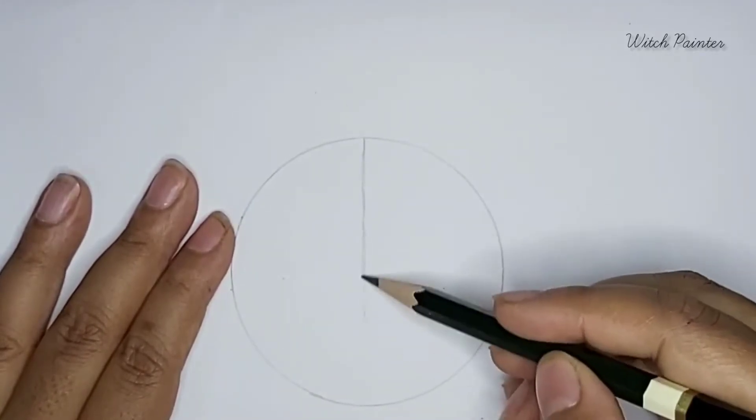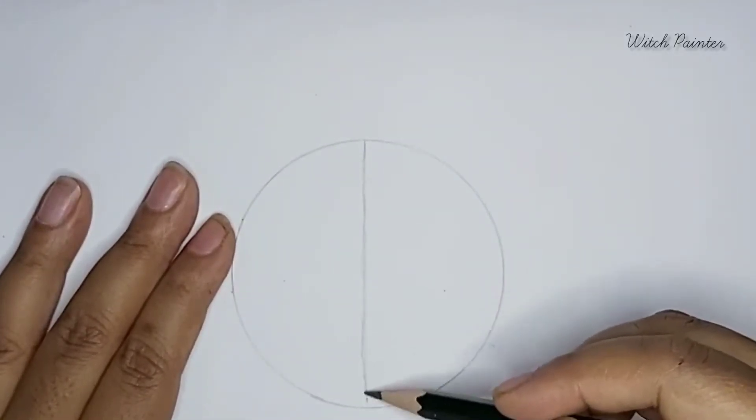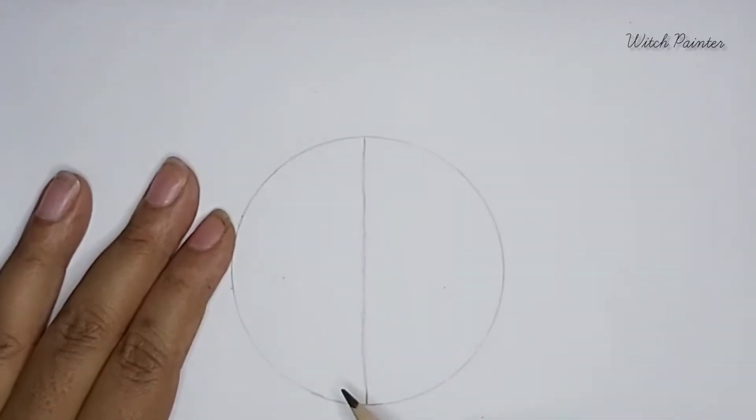Cutting the circle in half, and then you will draw one slanting line here and one slanting line here.